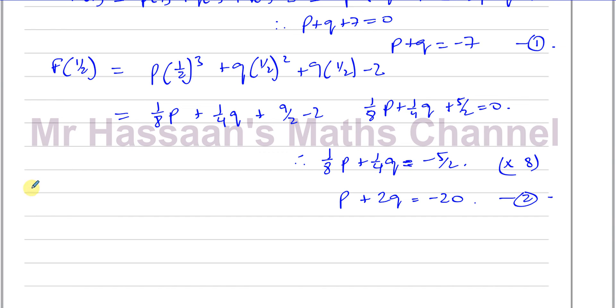So now we have equation 1, which is p + q = -7. I have equation 2, which is p + 2q = -20, and now we can solve these equations. We can do, for example, equation 2 minus equation 1. The p's will be eliminated, you'll have 2q - q, which is q, and you have -20 minus -7, which is -20 + 7, which is going to be -13.